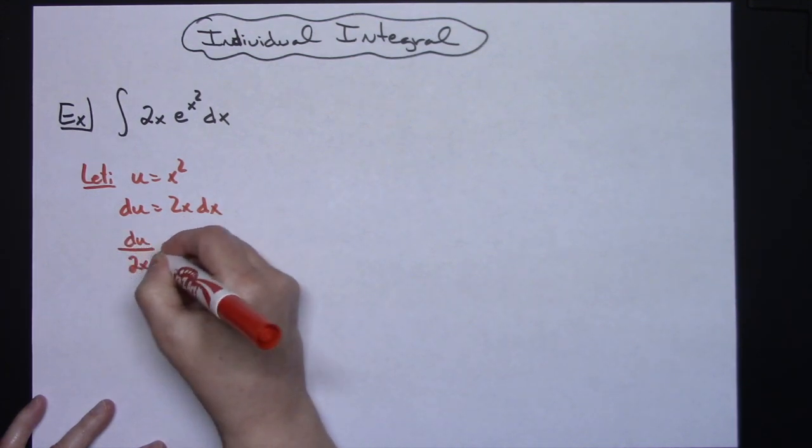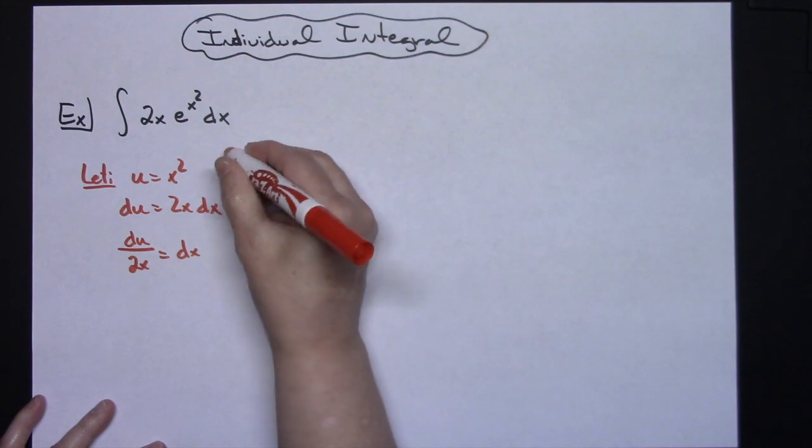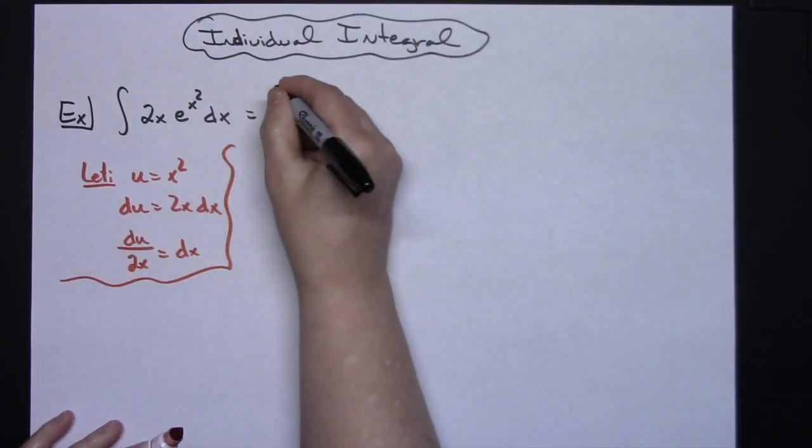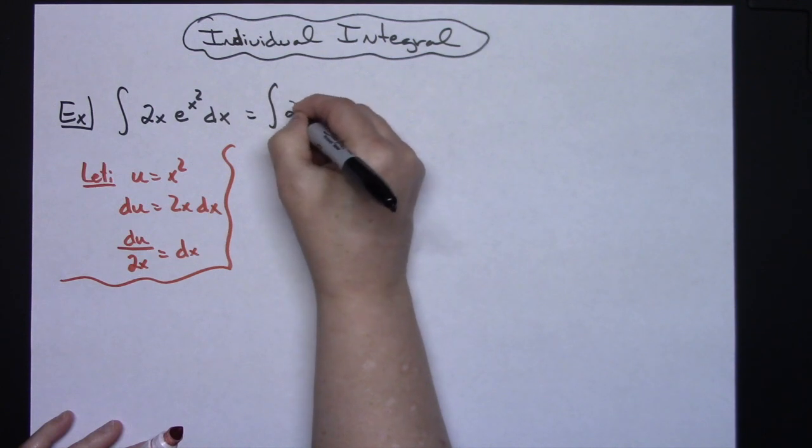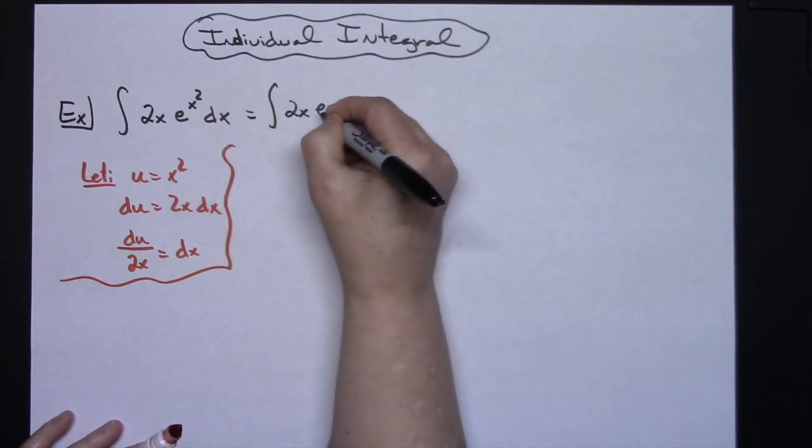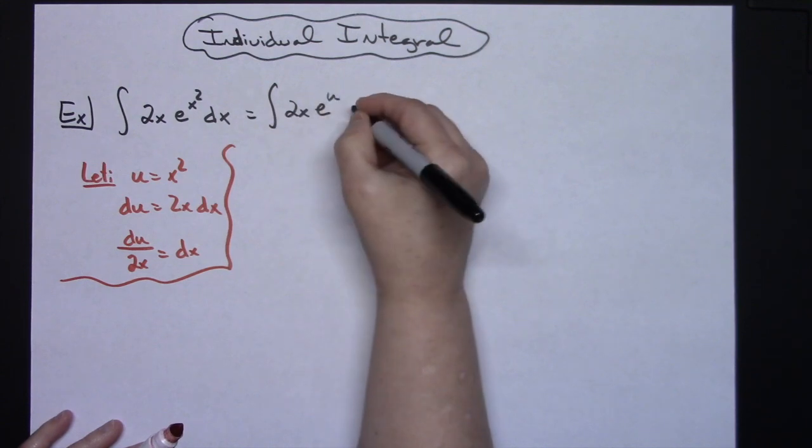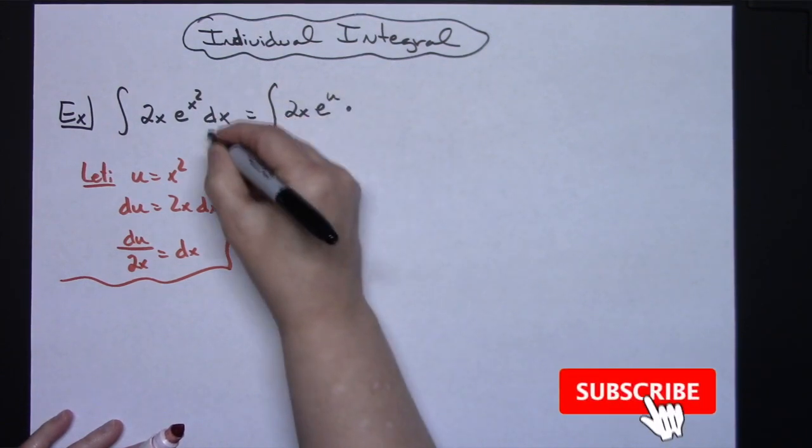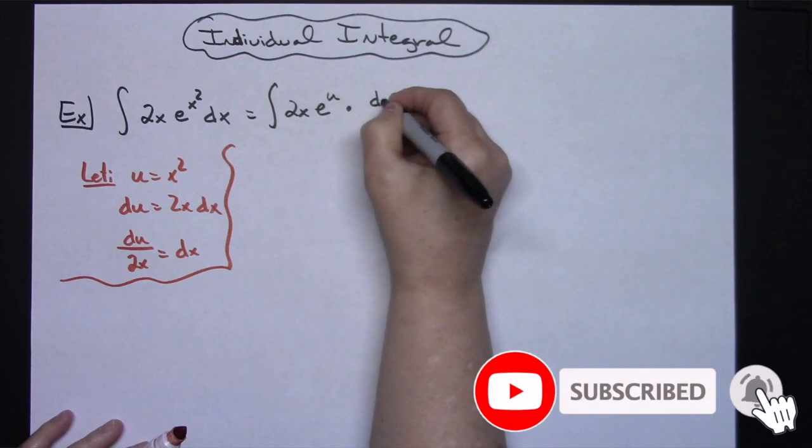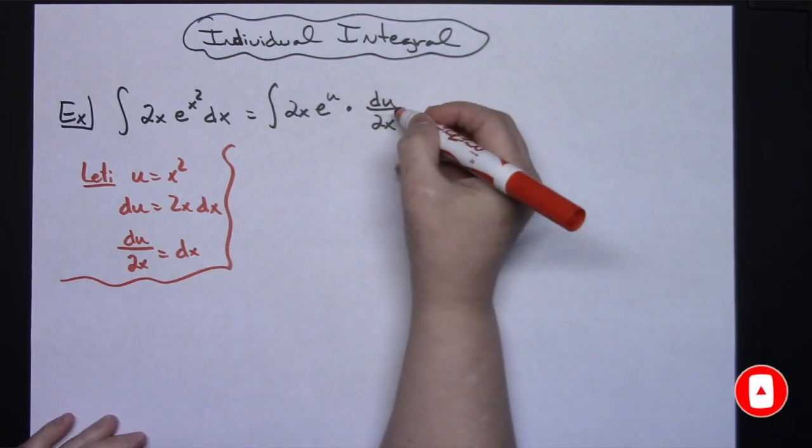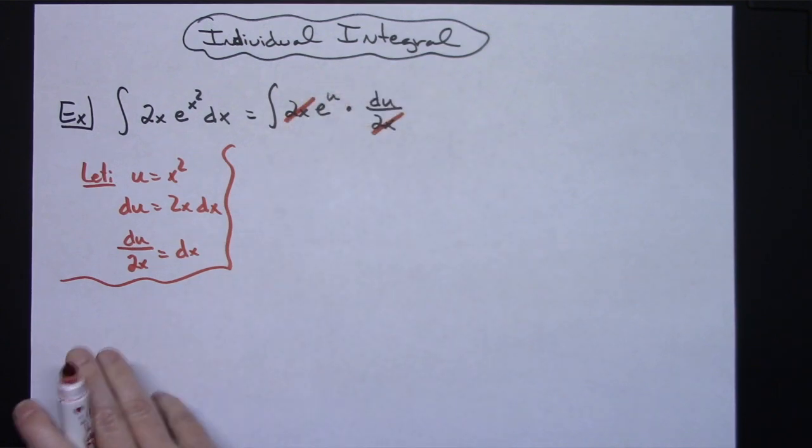Then I'm going to come back up to my original problem and I'm going to start substituting things. My 2x is going to stay there. I'm going to have an e, and since I let u be x squared, it will be e to the u. I'm going to replace that dx then with the du over the 2x. That's going to then allow those two x's to cross out, which is what I want to happen. It will then leave me with just the integral of e to the u du.